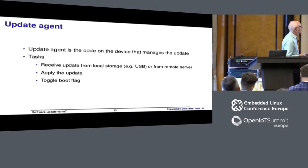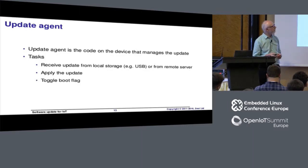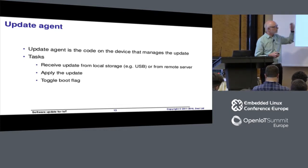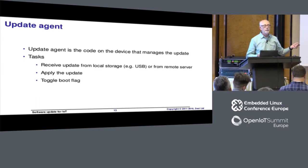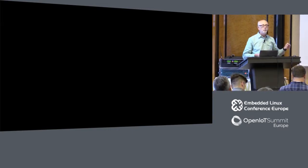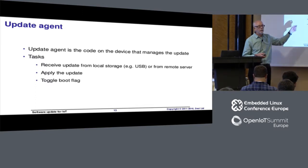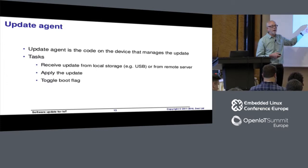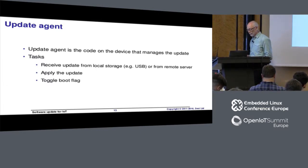The next thing I'm going to talk about is the update agent — something that's actually going to apply the update. We need to receive the update from somewhere: it can be from local storage like a USB thumb drive, or pulled from a remote server. Then we need to apply that update — write it to the appropriate partition. Then we need to twiddle the boot flag and force a reboot, so the bootloader will boot into the newly downloaded system.